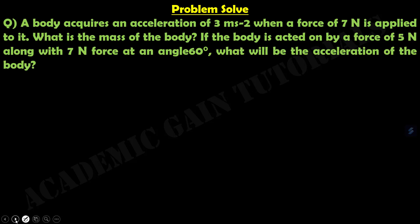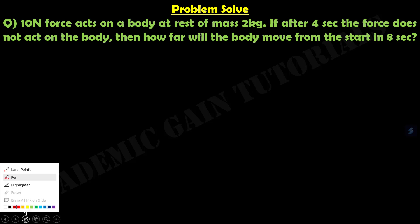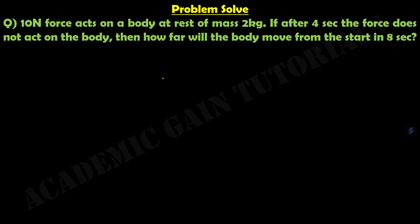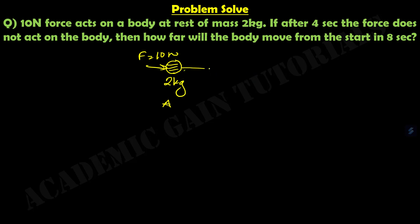In this video, we will solve some problems using the formulas we generated in laws of motion. The first problem is: a 10 Newton force acts on a body at rest of mass 2 kg. Suppose this body has a mass of 2 kg and we apply a force of 10 Newton. This force is applied for 4 seconds from point A to point B.